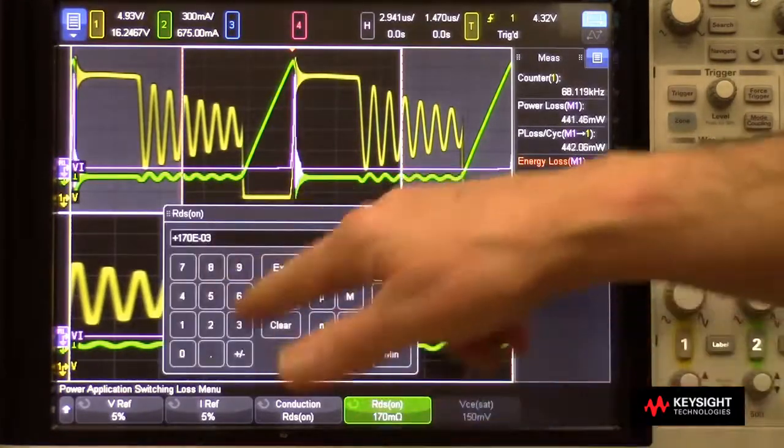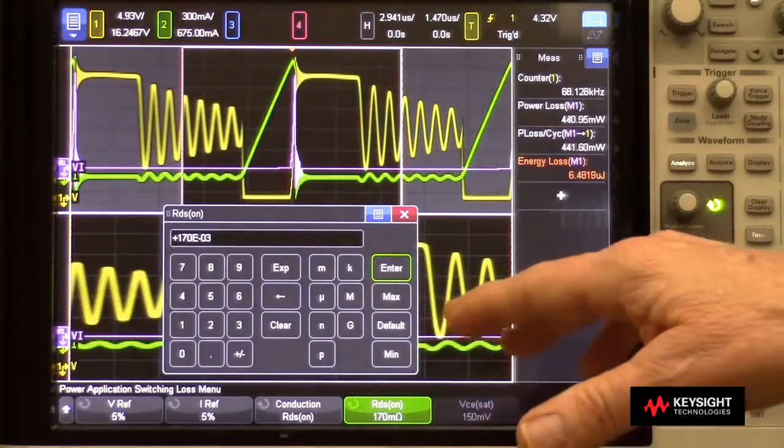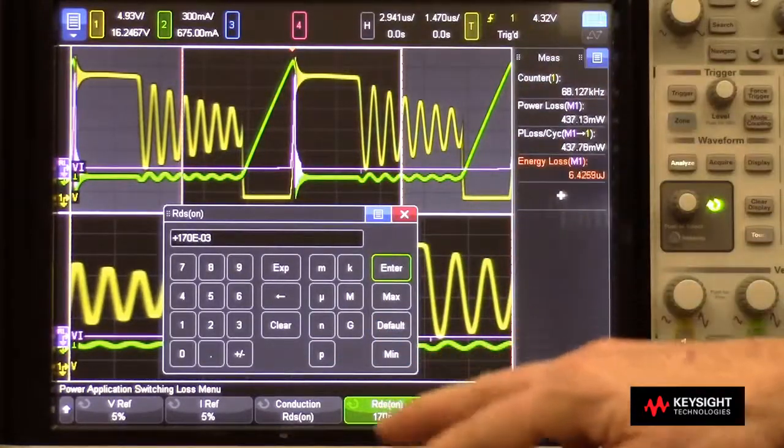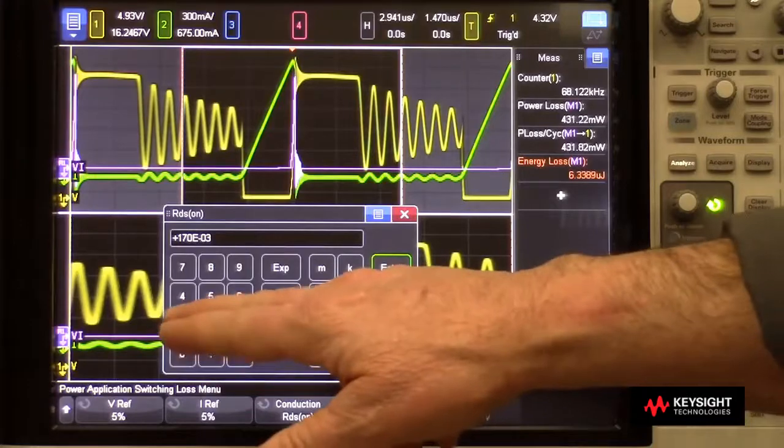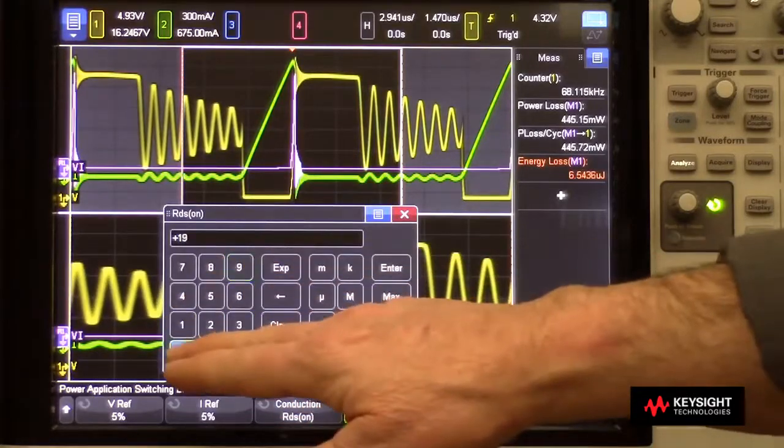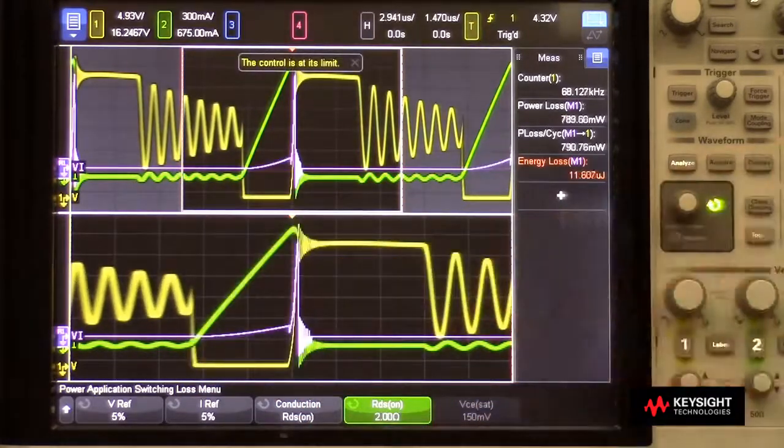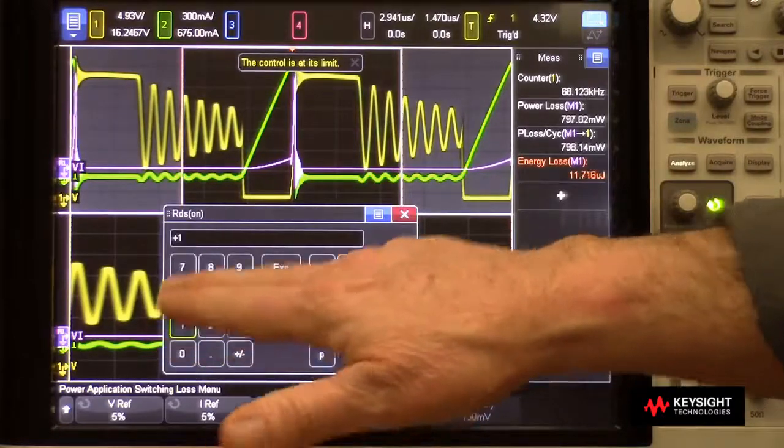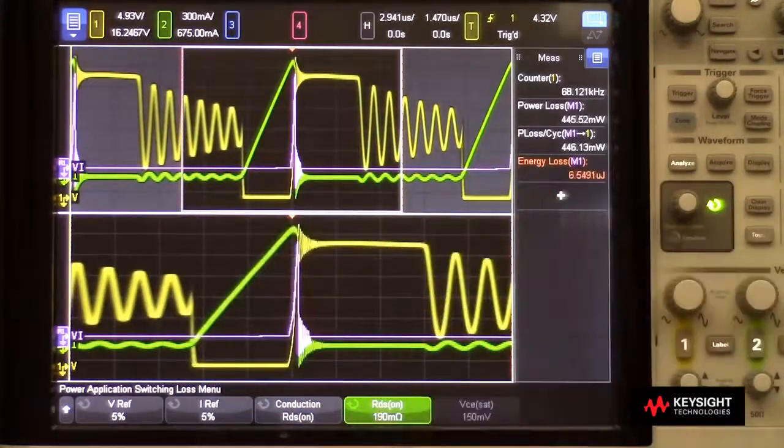Now you also have the option of entering any value you want for the RDS-on. Let's say I looked in a data sheet and it said, no, it's 190 ohms. I could plug that, not 190 ohms, 190 milliohms.